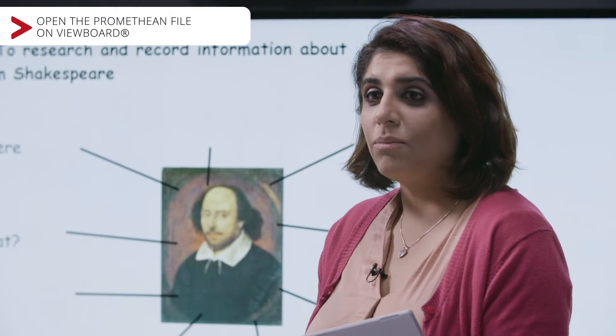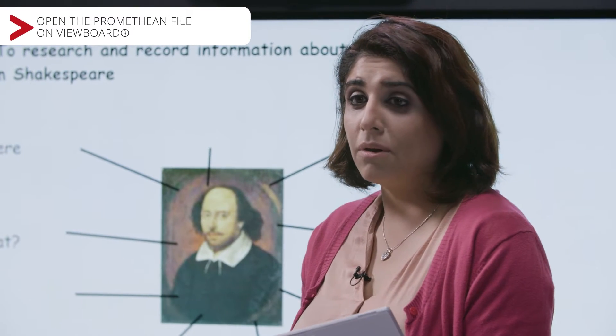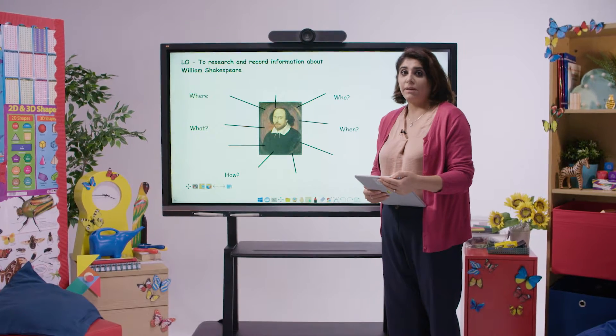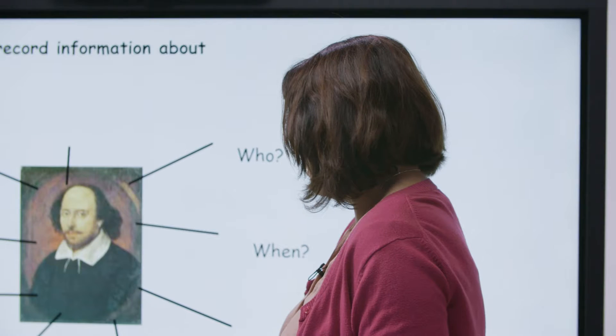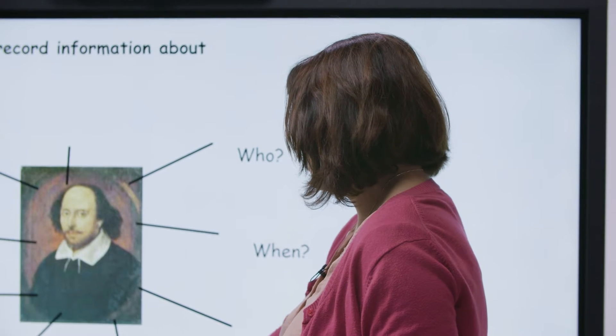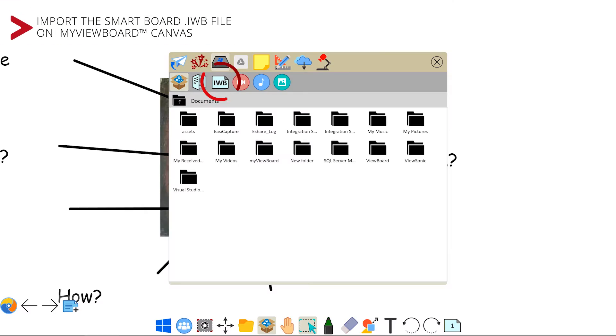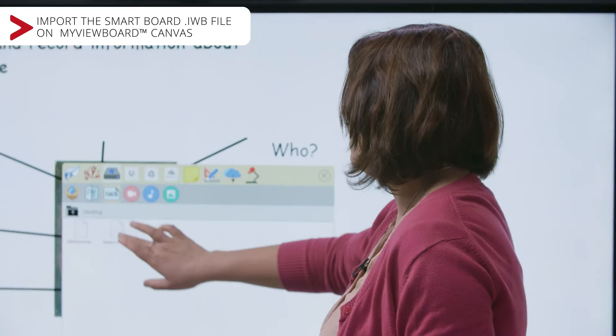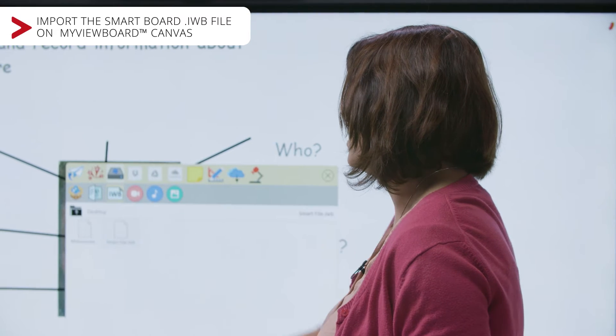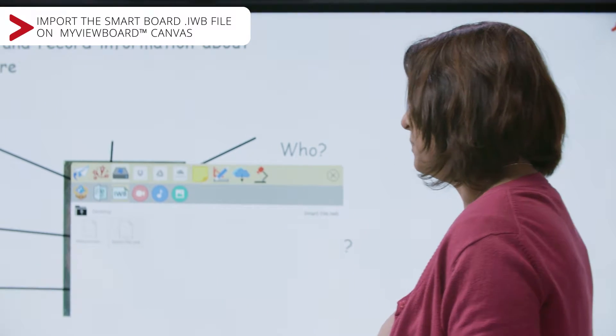And this is the same when using the SmartBoard IWB file. The way to go about doing this is by clicking on the magic box, then into IWB, and then this time into the Smart file.